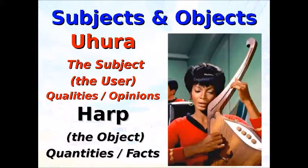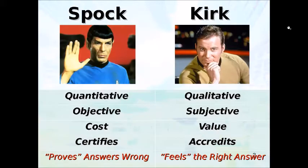Ohura is playing an object, the Vulcan harp. Ohura is a subject. Is the music she's playing good? That depends on the subjective qualities that somebody would like in music — that's an opinion. Subjective or qualitative reasoning is based on opinions. But this harp has a quantity of four knobs. Quantitative or objective thinking is based in fact. Spock is very good at the objective and Kirk is much better at subjective reasoning.